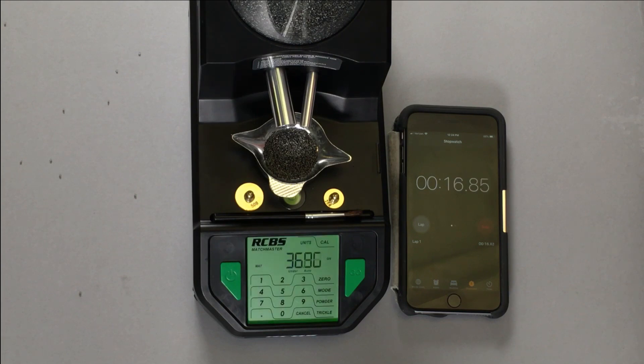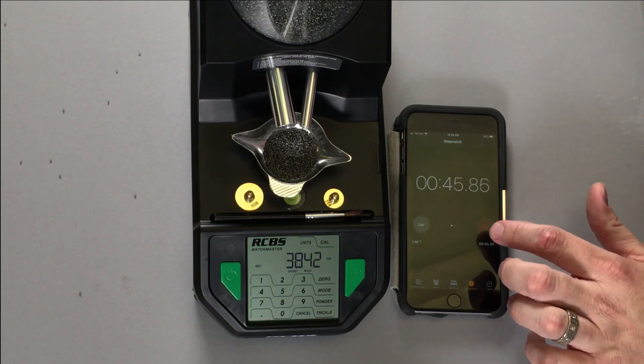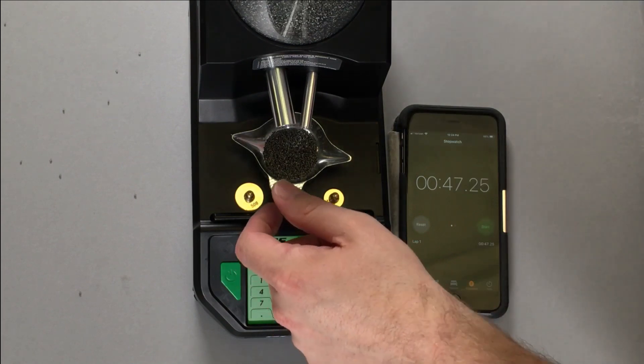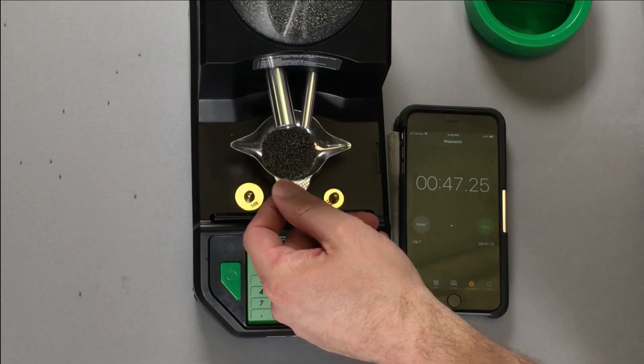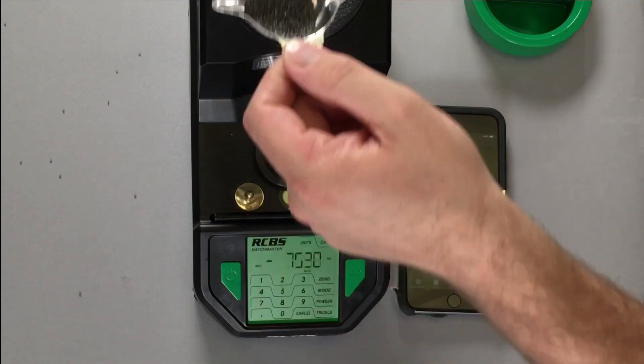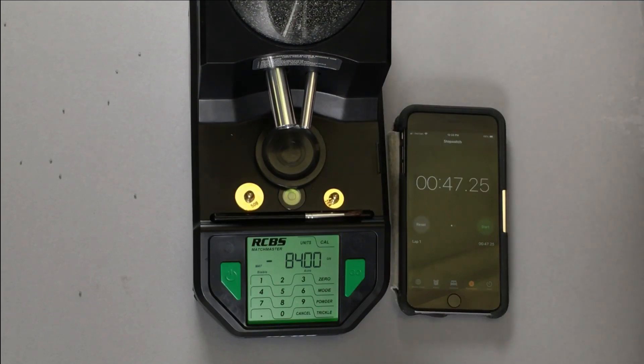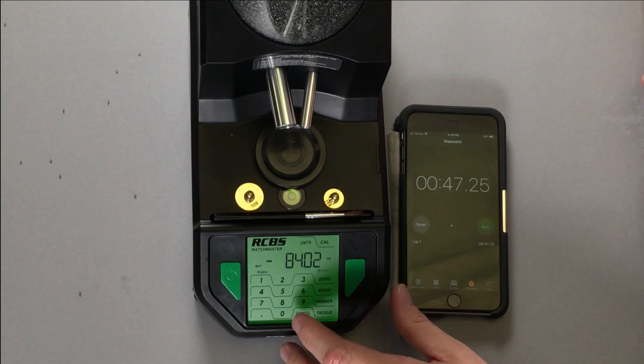As you can see, the stop points on the big tube and little tube have been fairly conservative. This allows us to make sure we've got dispense tubes that work for most powders on the market. All right, we're getting close. That one turned at 47.25 seconds and it was right at 38.5 grains, right at the target. But it was 47 seconds and I know with the technology in this thing that we can improve upon that.